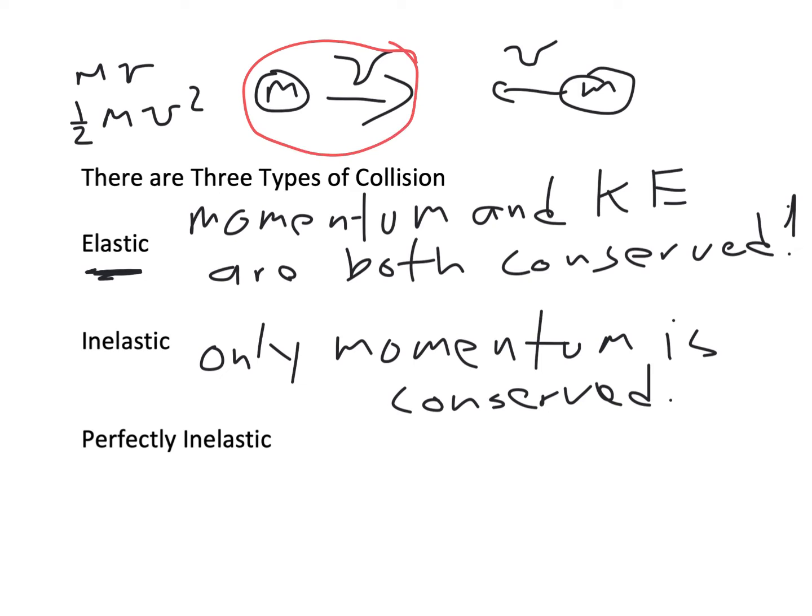Each ball has its momentum and kinetic energy before the collision. After the collision they're going to be going off with some different velocities, maybe even in different directions, but they still have their own momentum and energy. To see if they're conserved, you add up all the momentums before and all the momentums after and see if you get the same number. Then you add up all the kinetic energies before and all the kinetic energies after and see if you get the same number. If the totals match, it's conserved; if you get a different number, it's not conserved. It's really that simple.